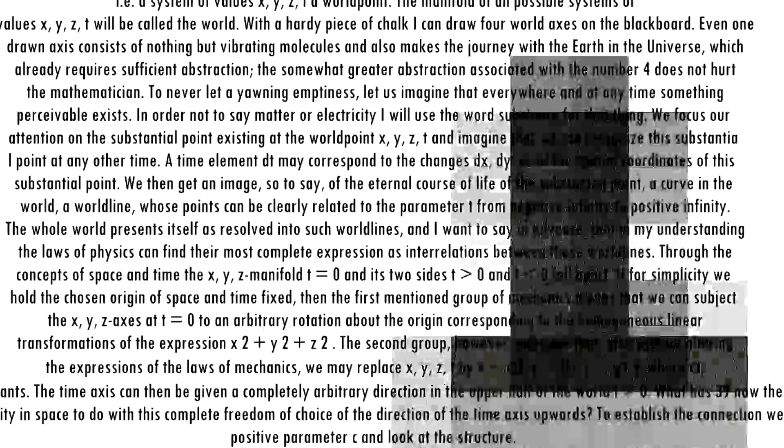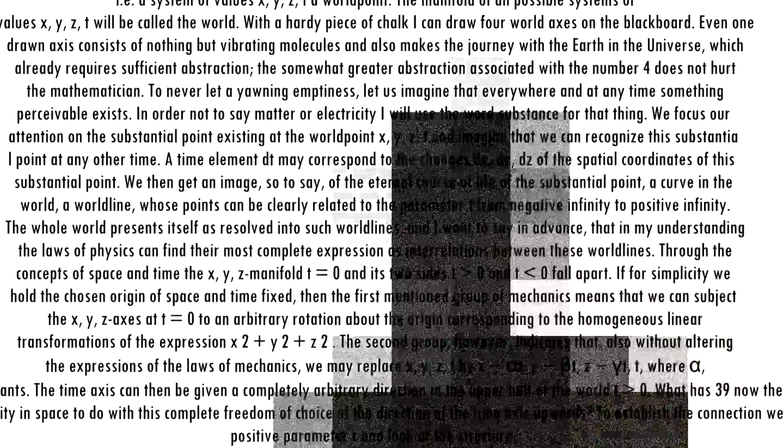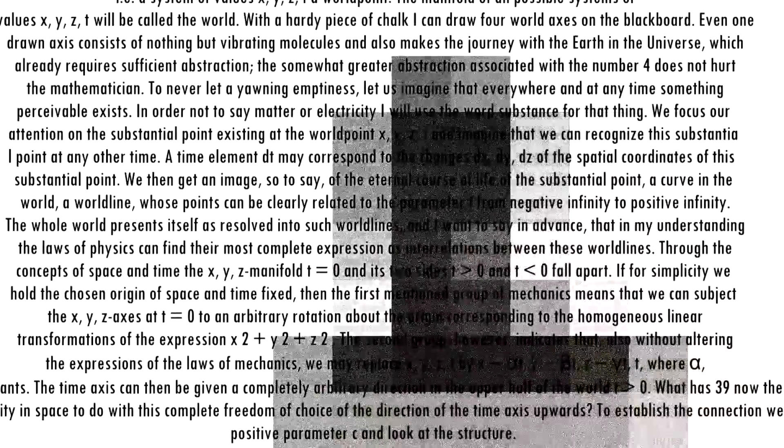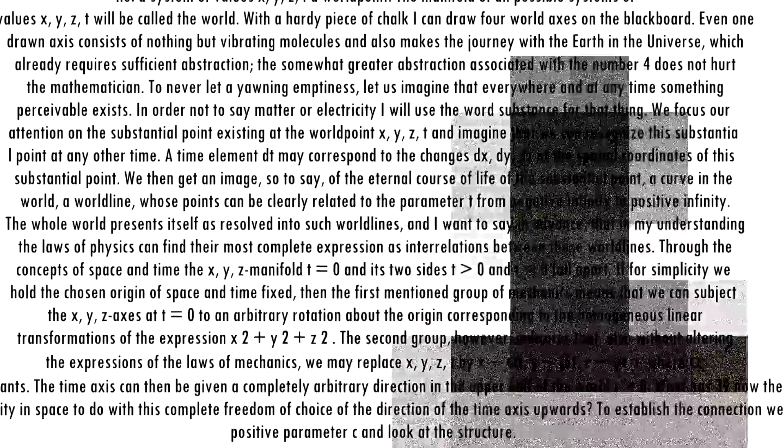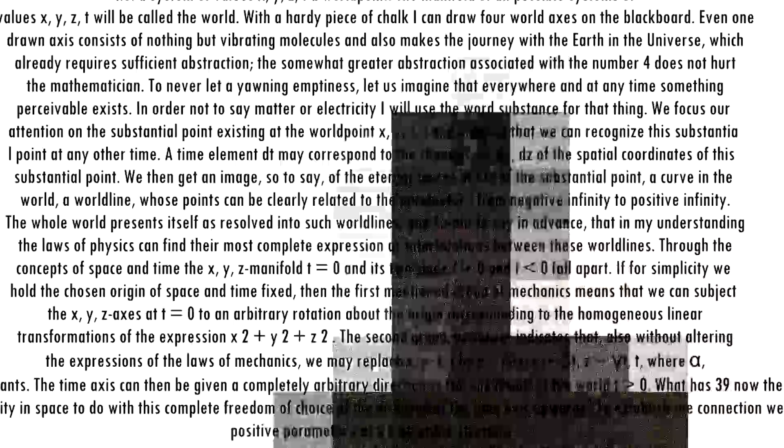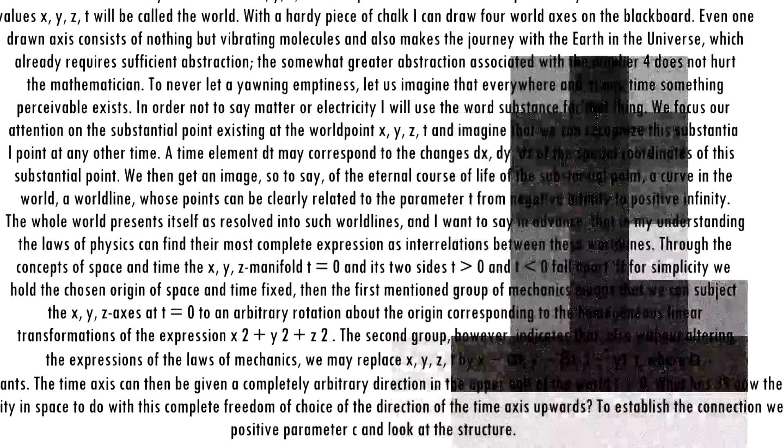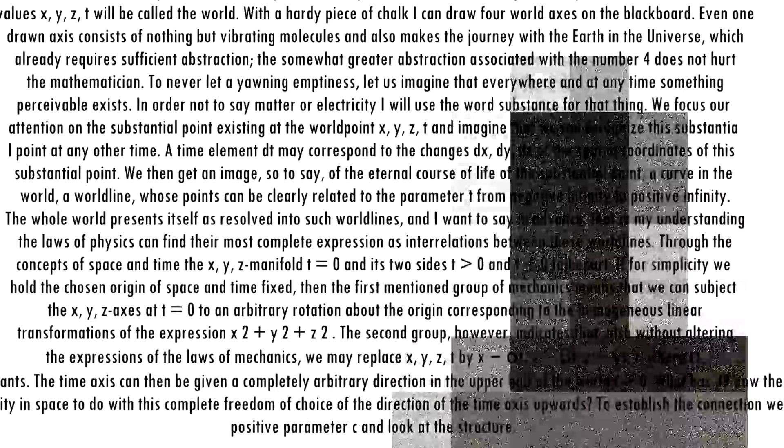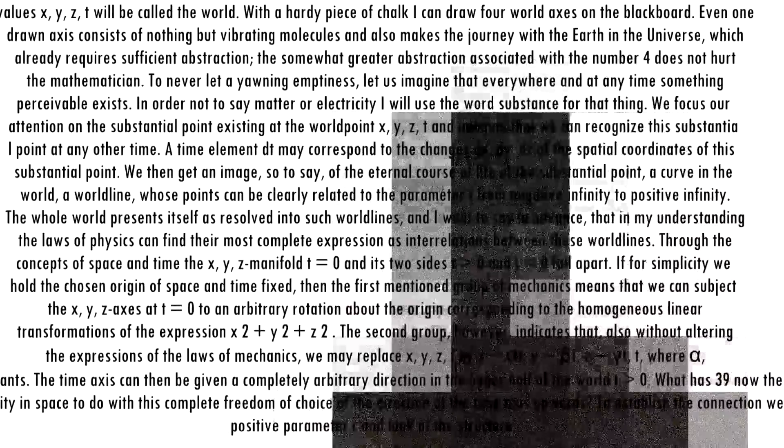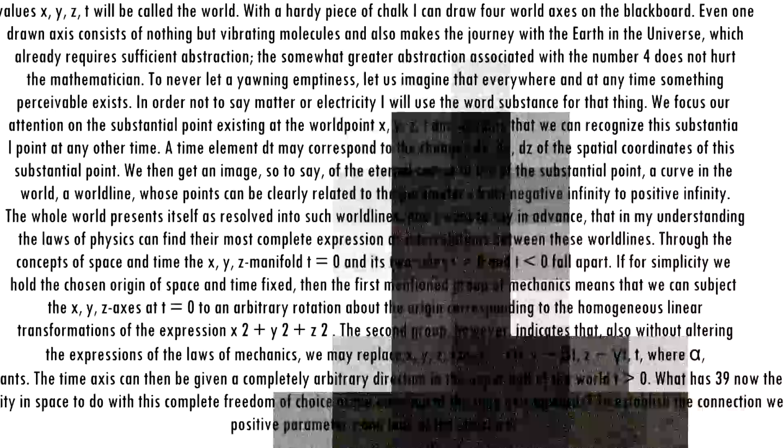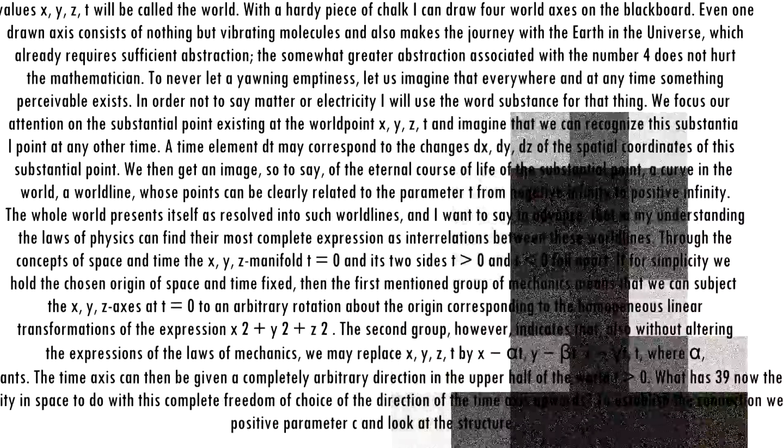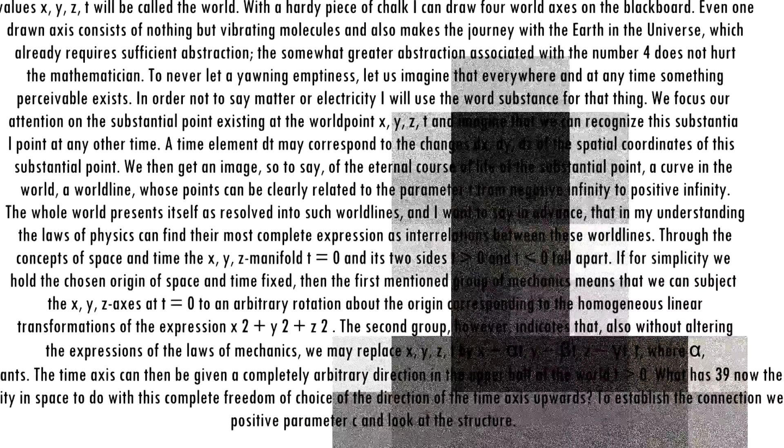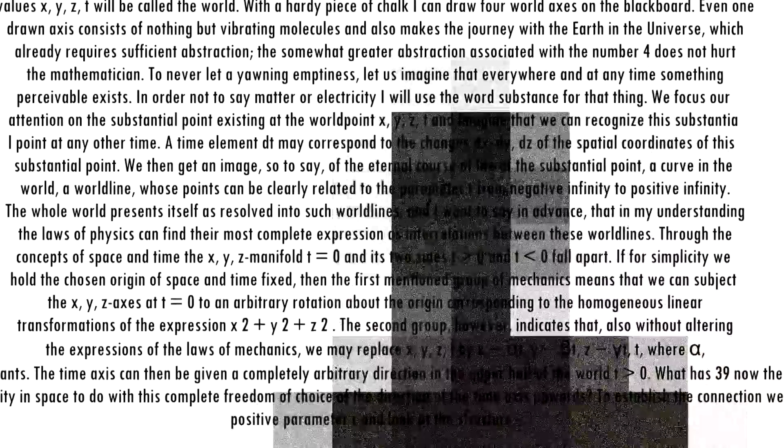also without altering the expressions of the laws of mechanics, we may replace x, y, z, t by x+αt, y+βt, z+γt, t, where α, β, γ are any constants. A time axis can then be given a completely arbitrary direction in the upper half of the world t>0. What has now the requirement of orthogonality in space to do with this complete freedom of choice of the direction of the time axis upwards? To establish the connection we take a positive parameter c and look at the structure.